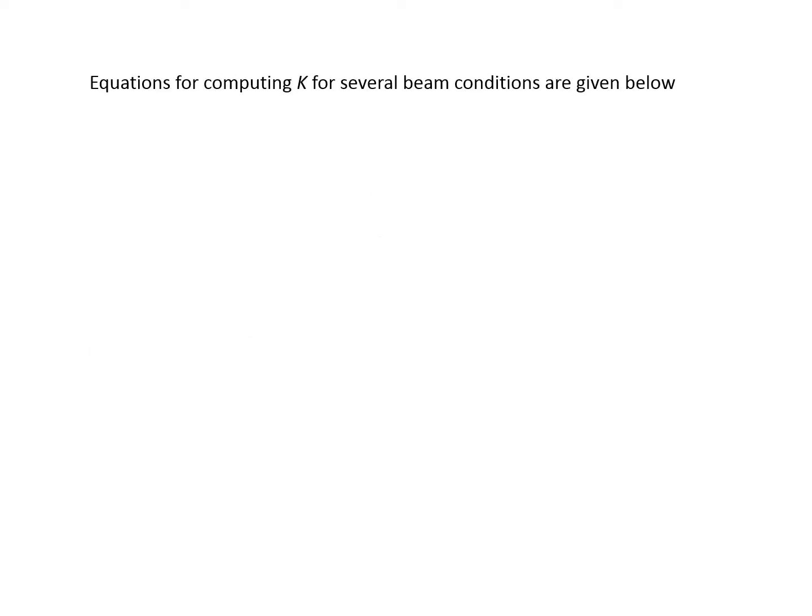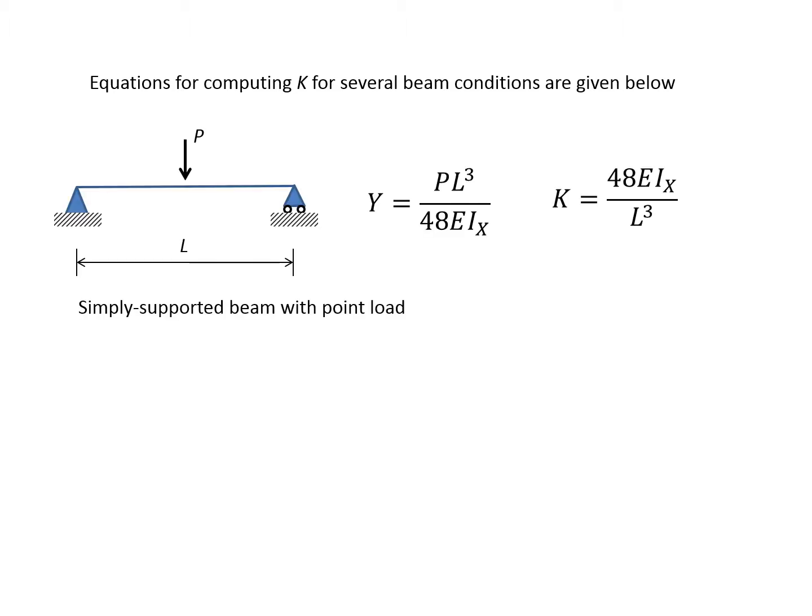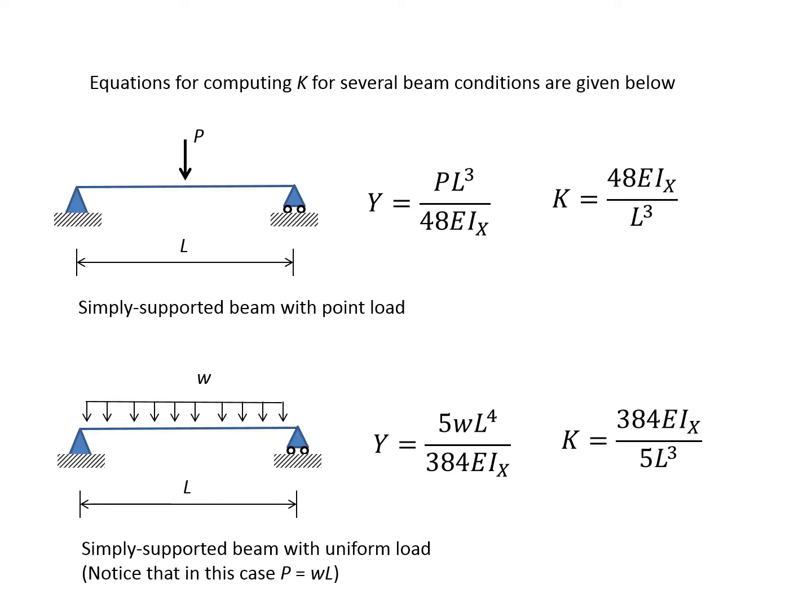Here are some examples of equations for k for beams of various conditions. A simply supported beam under a point load at the mid-span. The same beam under a uniformly distributed load little w.